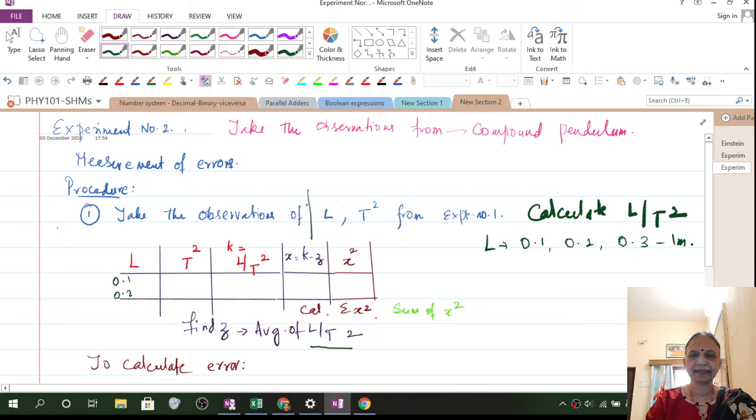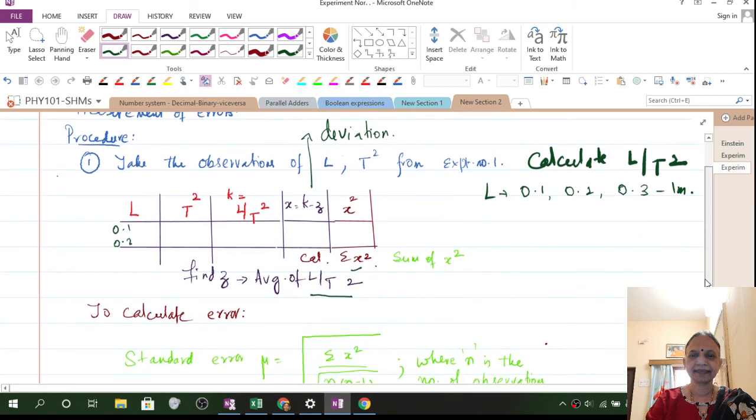This is referred to as deviation. You are calculating how much is your actual value deviated from your calculated value. Some can be positive, some can be negative. Take the square of that error. Take the summation of the error. Sigma X square is summation of the error.